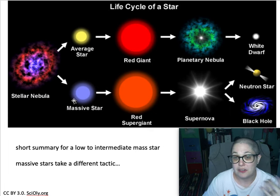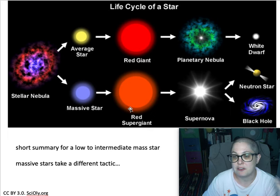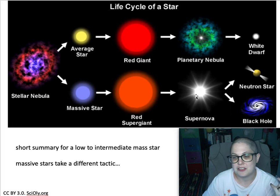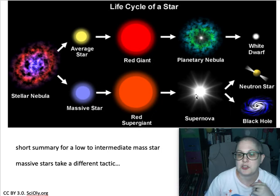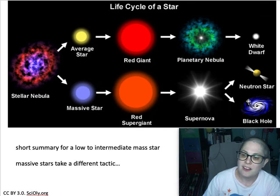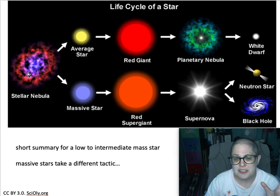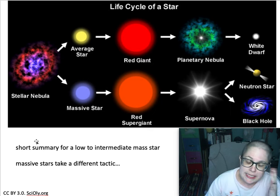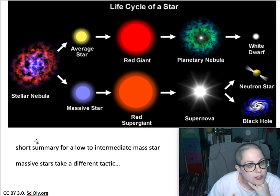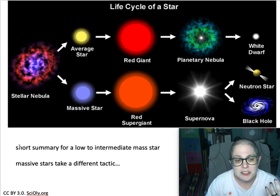A massive star — greater than eight times the mass of the sun — will go through its giant and super giant phases with different types of fusion. But eventually it hits iron, and iron fusion causes the star to contract and explode, causing a supernova. What's left behind from a supernova is either a neutron star or a black hole. These processes for massive stars might take hundreds of millions of years; for lower mass stars it's more on the order of billions of years.